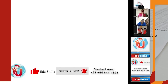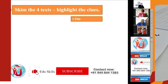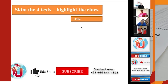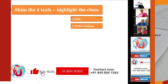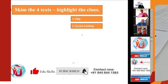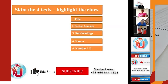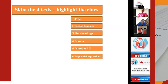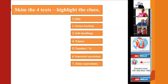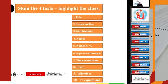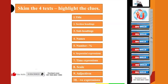Skimming means to just go over the four texts quickly. Highlighting the clues means you have to underline or highlight the title, the section headings, the subheadings, the names, numbers or percentages, sequential expressions, time expressions, scale adjectives, and negative expressions. Those are the major ones highlighted here.